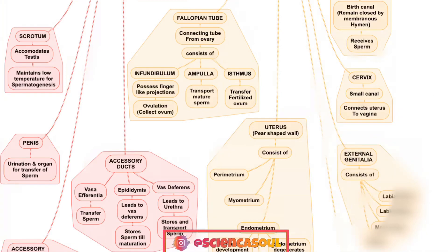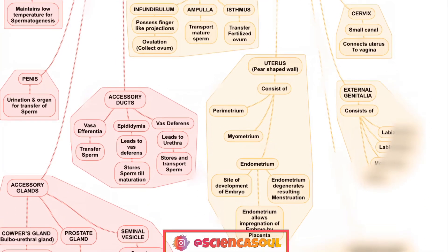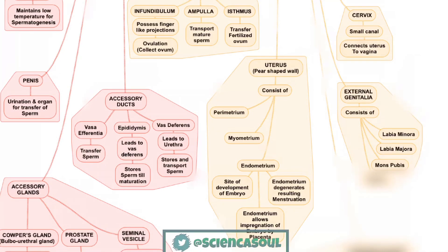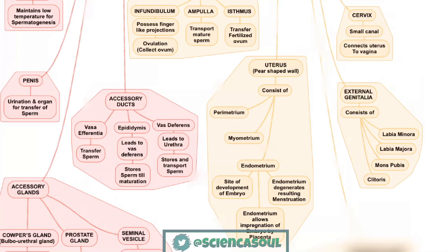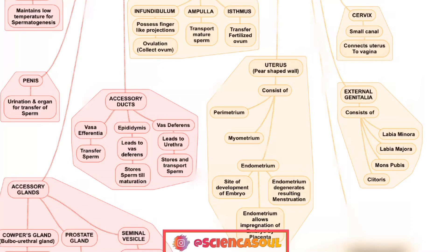Next is the external genitalia, which consists of labia minora, labia majora, mons pubis, and clitoris. The mons pubis is a cushion of fatty tissue. The labia majora are fleshy folds, and the opening of the vagina is covered by a membranous structure called the hymen. The clitoris is a tiny finger-like structure which lies at the upper junction of the two labia minora and above the urethral opening.